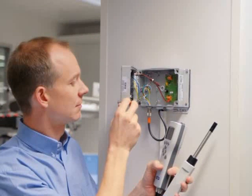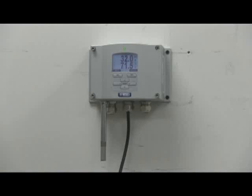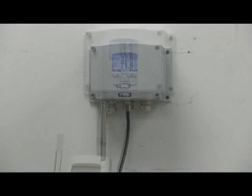This video will show you how to perform a one-point humidity calibration of a Vaisala HMT331 wall-mount transmitter using a recently calibrated HM70 handheld as your reference. This procedure is done in five easy steps.